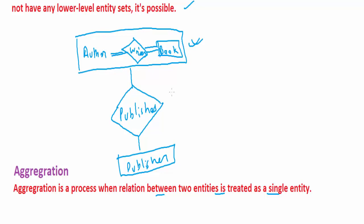Relationship with a relationship is known as aggregation. Relationship between two entities is aggregation.